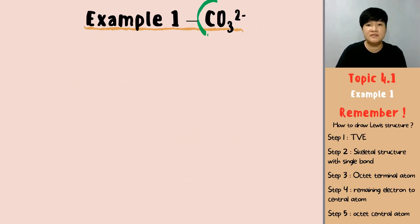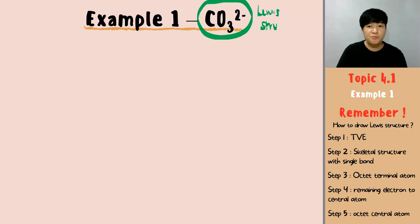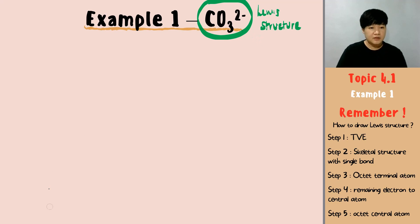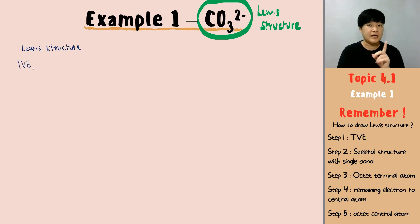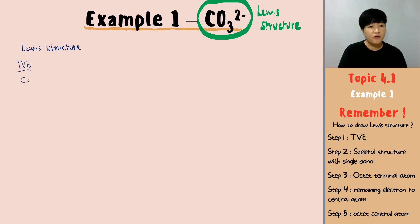The first example for resonance will be CO3²⁻. Before you have a resonance structure, you need the Lewis structure. The total valence electrons: carbon is 4, oxygen is 6 times 3 which is 18, and the charge is 2 minus so you add 2. Therefore you have a total of 24 electrons.